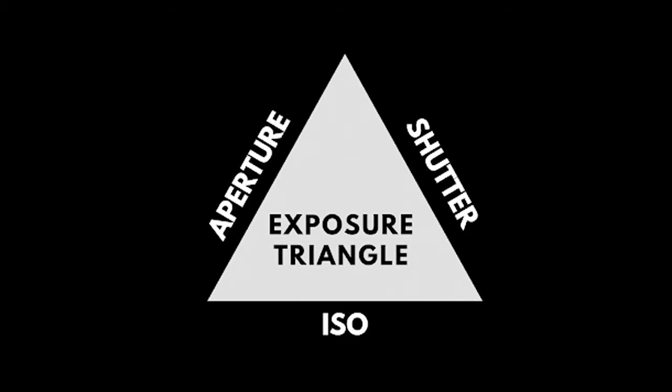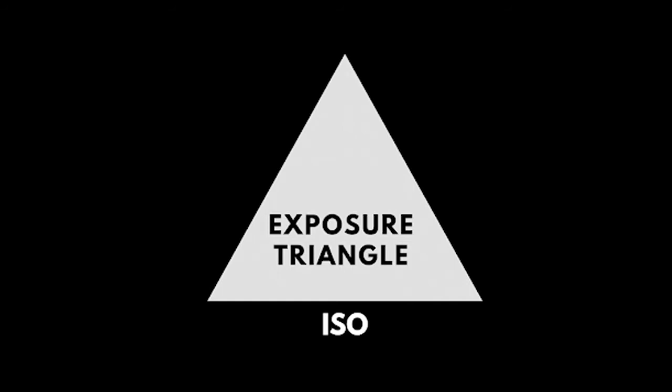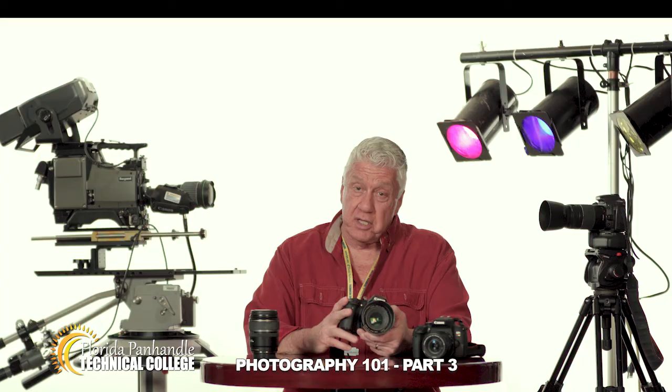Let's take a closer look at what we mean when we say exposure and demystify these functions. ISO, aperture, and shutter speed all control light coming into the camera, and they must all work together to get proper exposure.